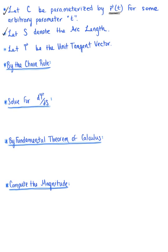We let s represent the arc length, and we let capital vector T represent the unit tangent vector. To begin, we think about what we know from the chain rule. By the chain rule of single variable functions, we know that the rate of change of the unit tangent vector with respect to an arbitrary parameter t can be defined as the rate at which the unit tangent vector is changing with respect to the arc length, multiplied by the rate of change of the arc length with respect to our arbitrary parameter t.